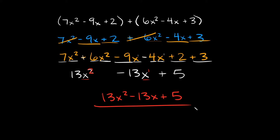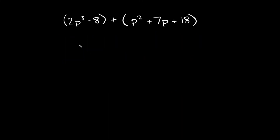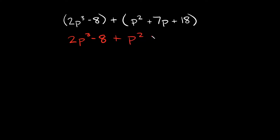Let's do one more that's a little more complicated. Here we have in parentheses 2p cubed minus 8, plus in parentheses p squared plus 7p plus 18. So again, the first thing you want to do is drop the parentheses: 2p cubed minus 8 plus p squared plus 7p plus 18.